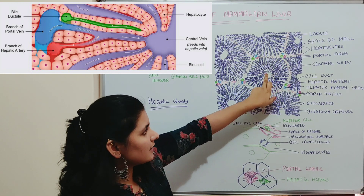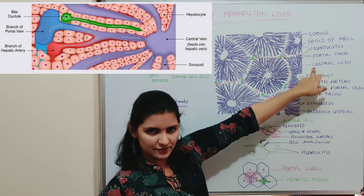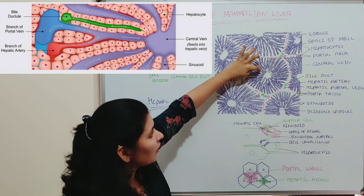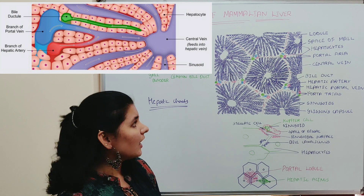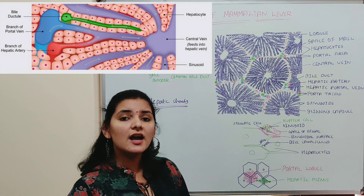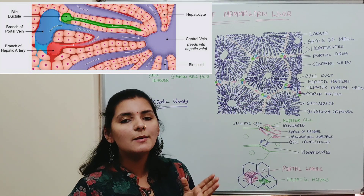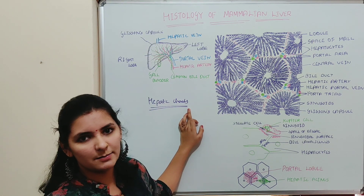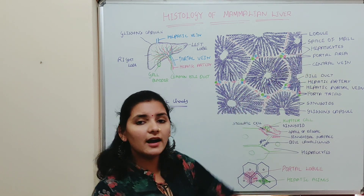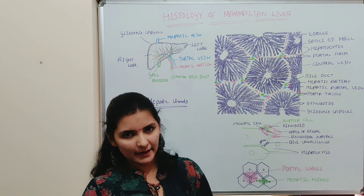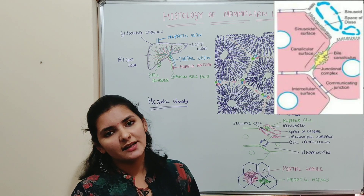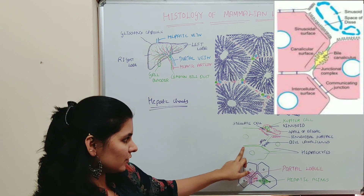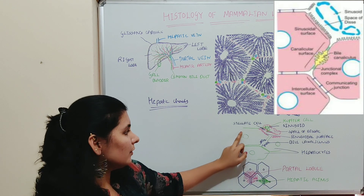These hepatic cords are arranged in a radiating fashion from the central vein. The vein present at the center of each lobule is known as the central vein. The hepatic cords radiate from the center to the periphery, are arranged in one or two cell thickness like bricks of a wall, and are the secretory parts of the liver — these hepatocytes are the ones which secrete bile juice. Individual hepatocytes are cuboidal or polyhedral in shape.